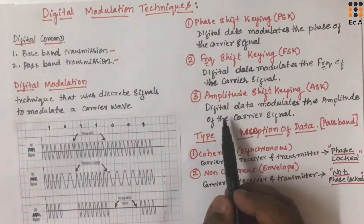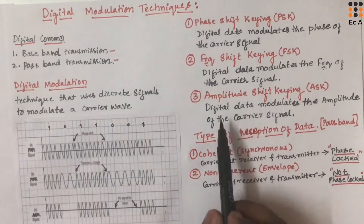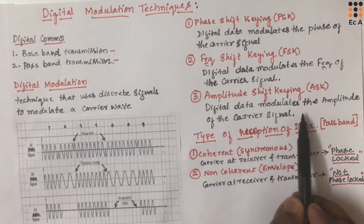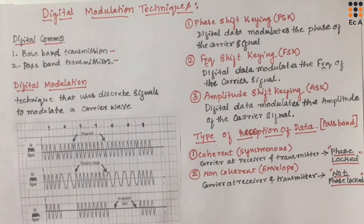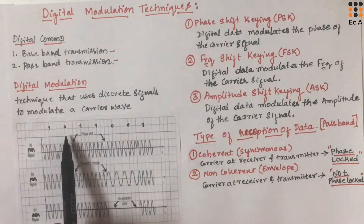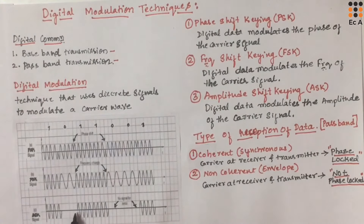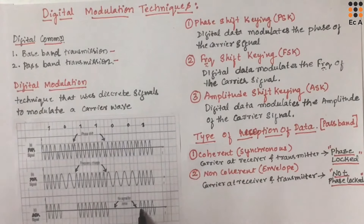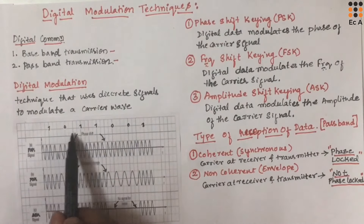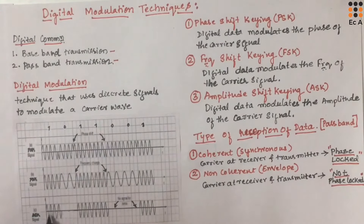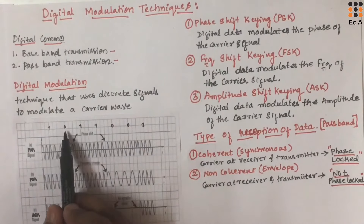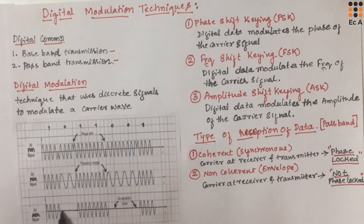The third type of digital modulation technique is amplitude shift keying. In this technique, the digital data modulates the amplitude of the carrier signal. When there is 1, there is no variation in the carrier signal — the carrier signal is present. When there is 0, there is no signal. For 1, you will have a carrier signal, and for 00, there is no signal. The amplitude of the carrier signal is varied with respect to the sequence: if 1 is there, there will be a carrier signal, and for 0, the amplitude of the carrier signal is made 0.